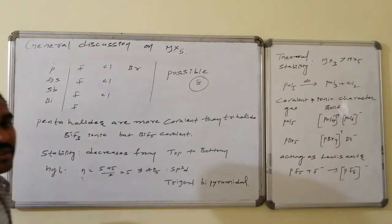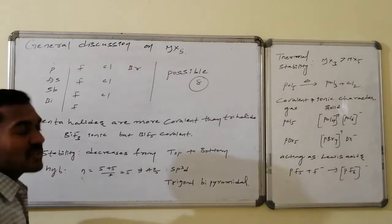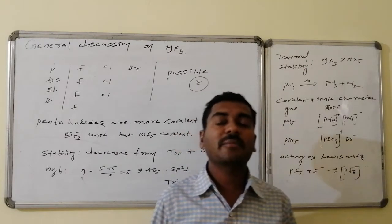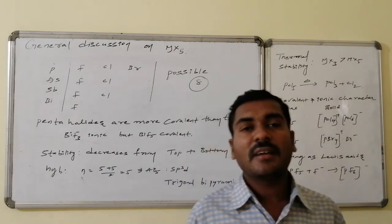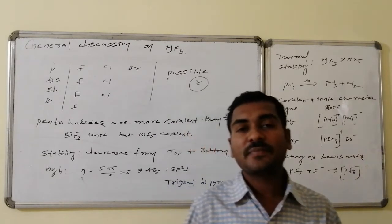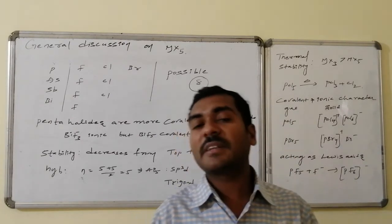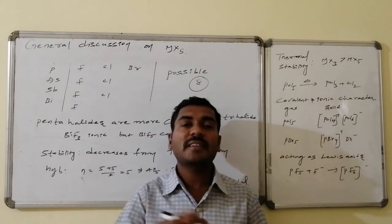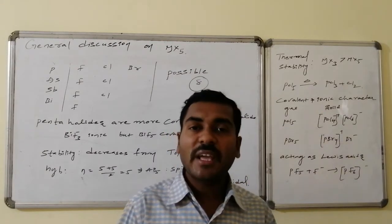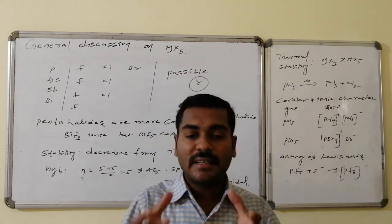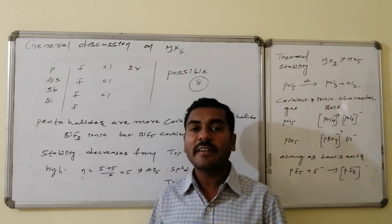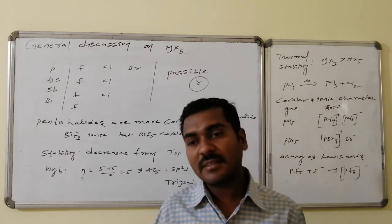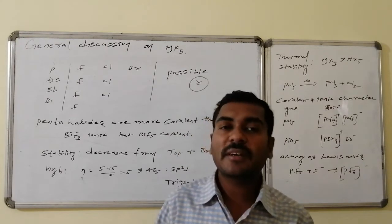Pentahalides are more covalent than the corresponding trihalides. As per Fajan's rule, in a pentahalide the central metal atom is in the plus 5 oxidation state. At plus 5, its size decreases, its charge increases, and its polarization power increases. As its polarization power increases, it withdraws electron density from the anion back toward itself, representing covalent character. Thus pentahalides attain more covalent character compared to trihalides.